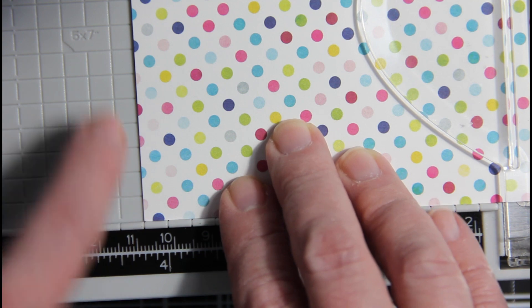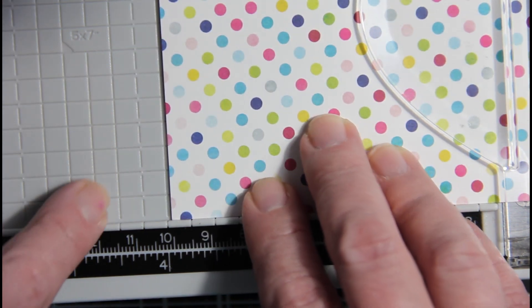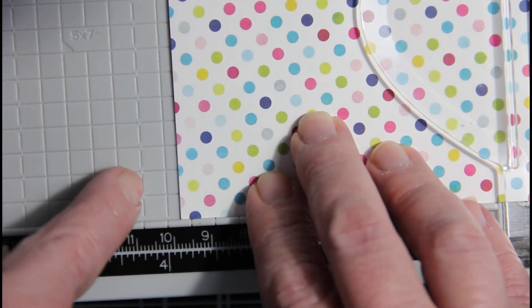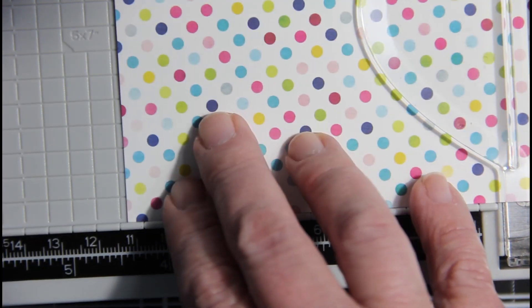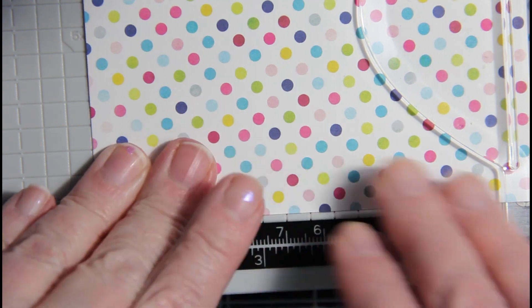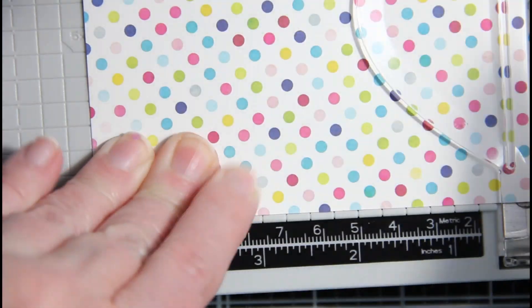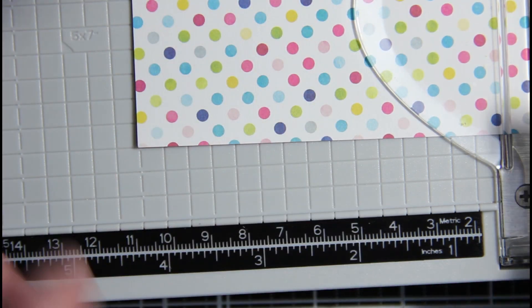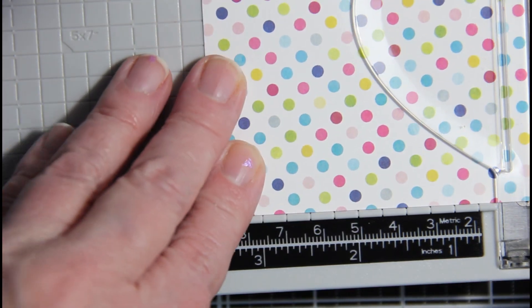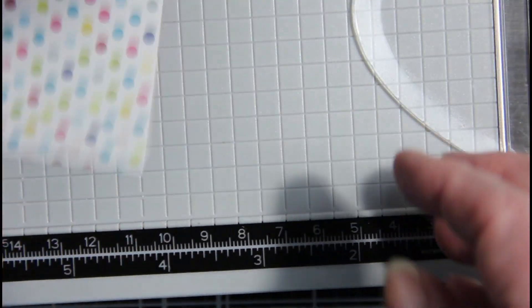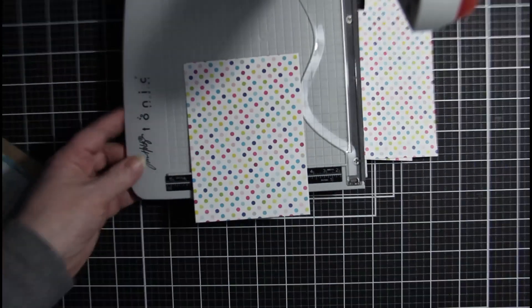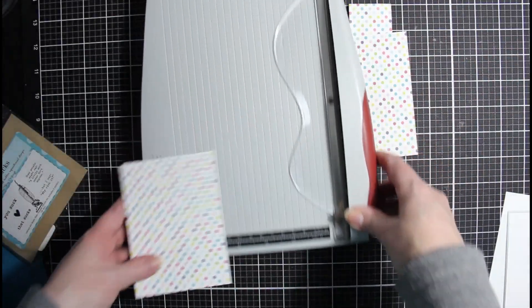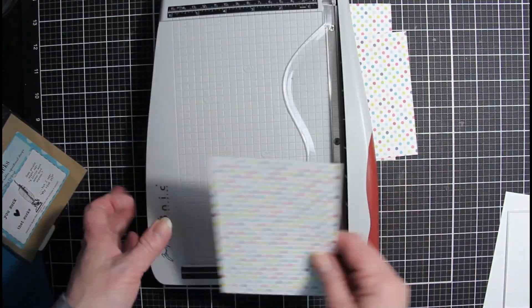And what I love about this trimmer is that there are lines here for every 1⁄4 of an inch. So, I know this is 4 1⁄4, which is common for a card. And I can just move this over two more blocks for the 4 3⁄4. Then, I can turn the paper and I can cut it at 3 1⁄2. And I have my pattern paper cut with my trimmer. And this is my Tim Holtz trimmer.